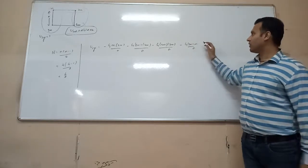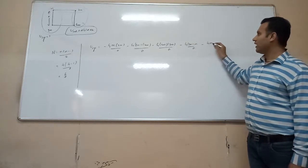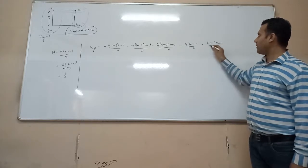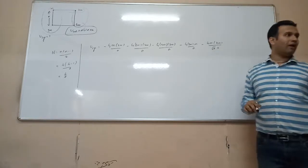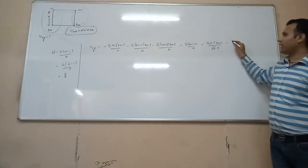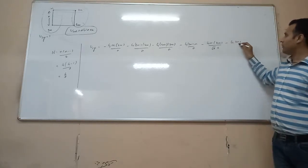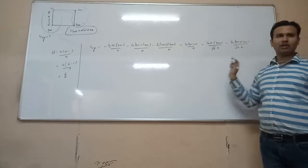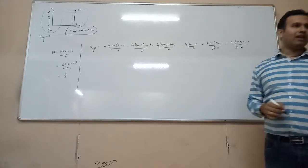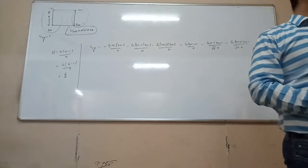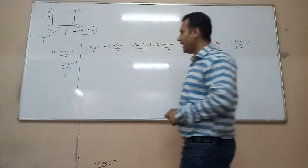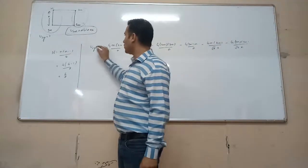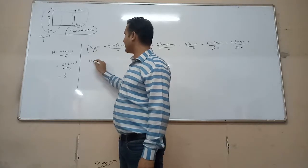For the potential energy, the first term is −Gm × 4m for one pair, and the third pair involves 3m × 4m. We will now compute U-final, the total potential energy of the system, using these pair separations.